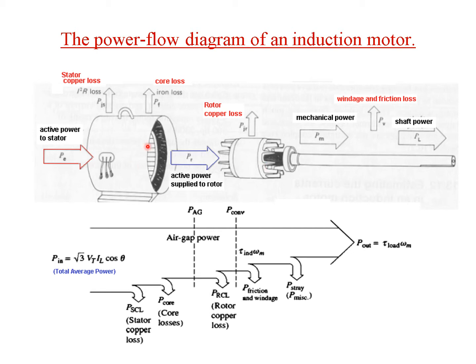The rotor is inside the stator, so that air gap power will be available to the rotor. In the rotor, there will be a copper loss as well, because there are windings here. After the copper loss, what we get will be the mechanical power. Mechanical power will also go through windage and friction loss from the air present inside.